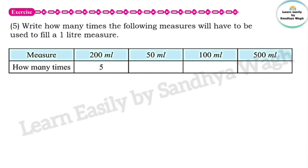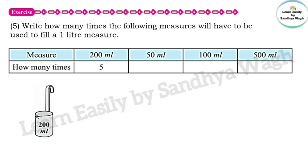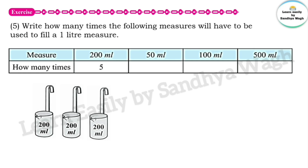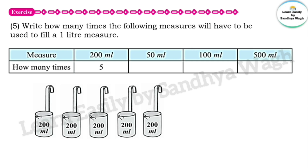Next question: write how many times the following measures will have to be used to fill a 1 litre measure. The measures given are 200 ml, 50 ml, 100 ml, and 500 ml. For 200 ml: 200, 400, 600, 800, 1000 ml — so 200 ml measure is needed 5 times to complete 1 litre.